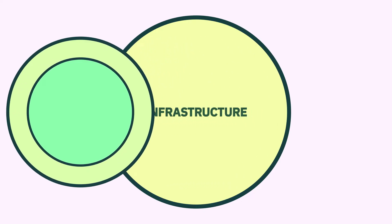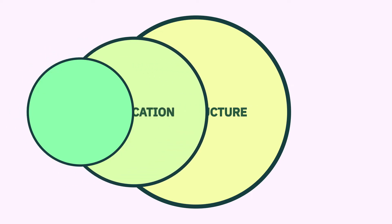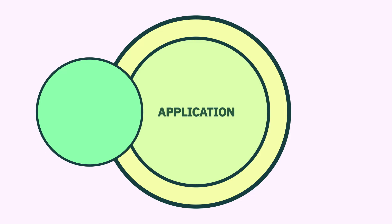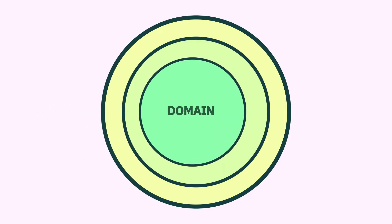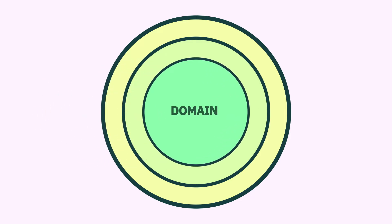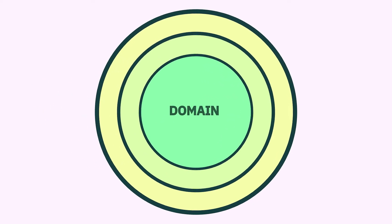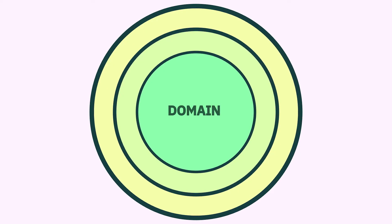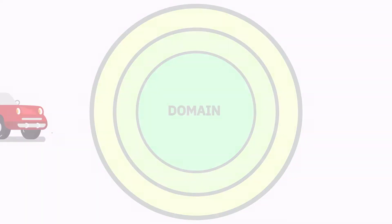This is the outermost shell, which is the infrastructure layer. We will get into detail. Inside this comes the application layer, where we deal with our business logics. Last and at the very center, you can find the domain layer. Now let's understand what exactly each layer means and how they are interdependent.